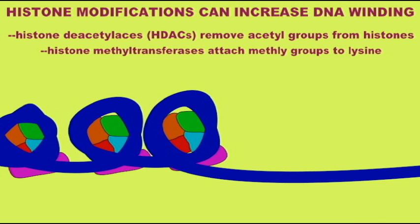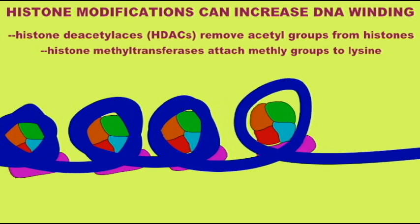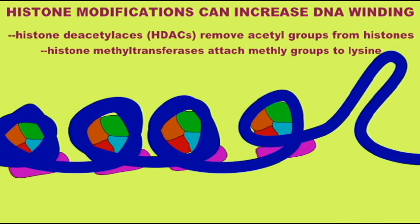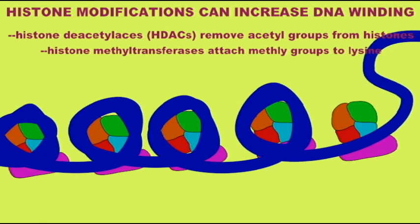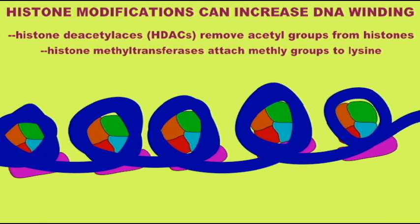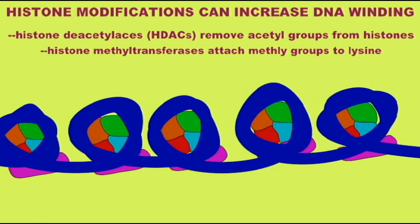In fact, the methyl group on lysine 27 can permanently silence a gene. Enzymes known as histone methyltransferases, such as polycomb and trithorax, attach methyl groups to lysine.